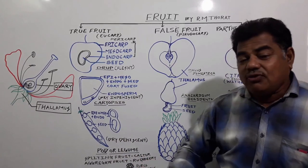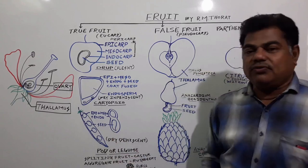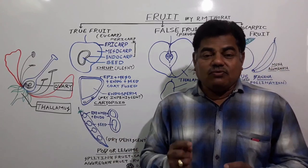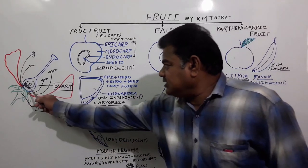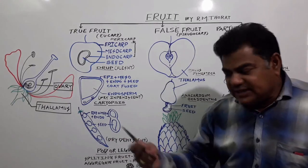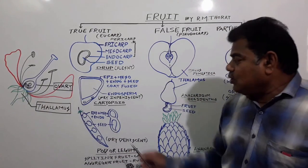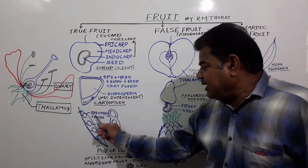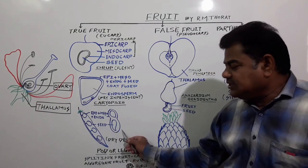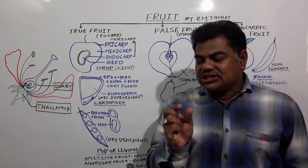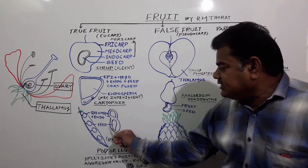For example, the legume of Pisum sativum — the seeds are the ovules converted after fertilization, and the ovary wall gets converted into the fruit wall. In the case of this legume — Pisum sativum and Arachis hypogea — the epicarp, mesocarp, and endocarp are present, and the fruit wall becomes dry, meaning it is included under dry fruits.